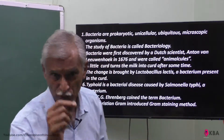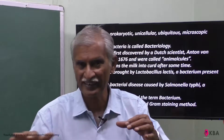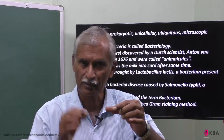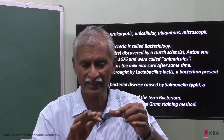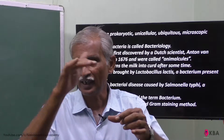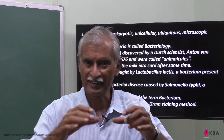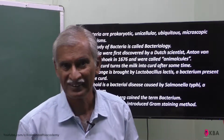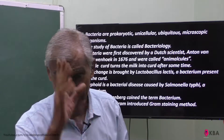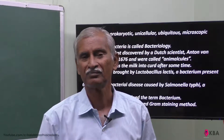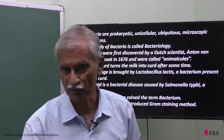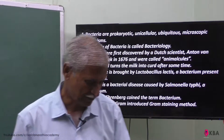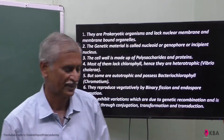In the Gram Staining Method, a sample is taken, washed, fixed, and placed in a coloring solution. If you see a particular color retained, it is gram-positive; if the color is lost, it is gram-negative. This method allows us to classify bacteria as gram-positive or gram-negative.